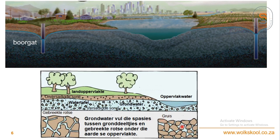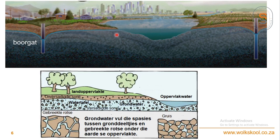Van daar af kan dit nog filtreer tussen spasies van byvoorbeeld gruis deeltjies, en dan vul dit die spasies op en word daar geberg. Soos julle weet is grondwater ons suiwerste water - jy kan dit net so drink as jy dit kan uitkry met van boorgat en so meer. Dit is drinkbare, goeie gesonde water. As jy kyk na hierdie brengie, sien jy hier is boorgat gemaak, en die boorgat verkry dan die water van hierdie laag - baie keer van die akwafere.